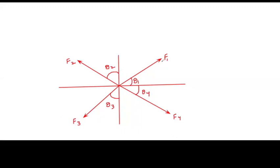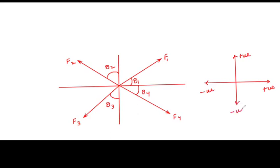Whenever a force is in an inclined direction, it is moving with respect to both horizontal and vertical directions. Just as in a graph sheet, we define sign conventions: forces moving to the right are positive, upward is positive, leftward is negative, and downward is negative. So F1 moving right is on the positive x-axis, and moving upward is on the positive y-axis.